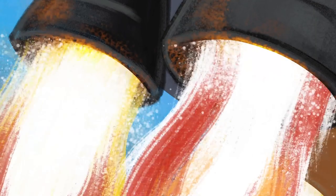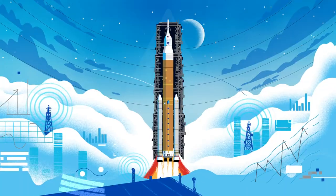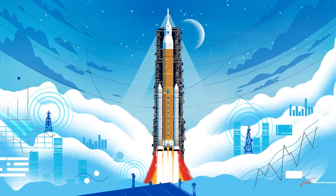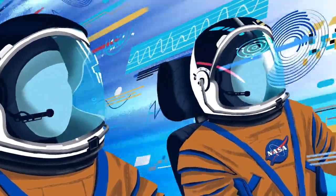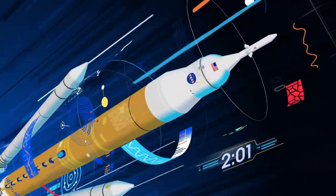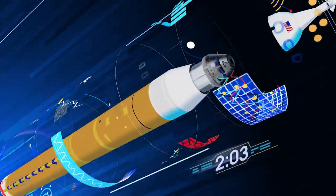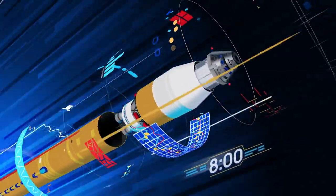Once ignited, there's no stopping what comes next. All four RS-25 engines and the two solid rocket boosters come to life thundering our crew upwards. Two minutes after ignition, the solid rocket boosters are spent and released. Eight minutes after launch, the core stage is depleted and separated.